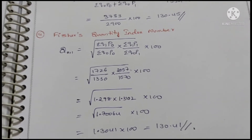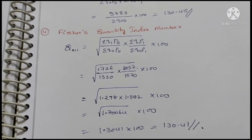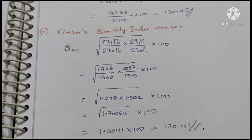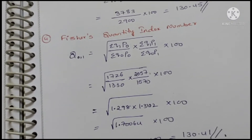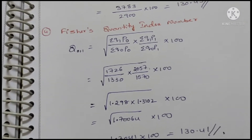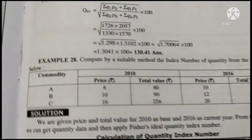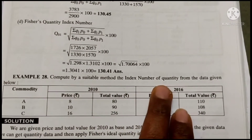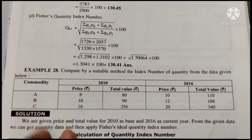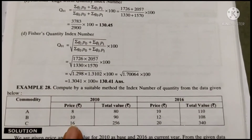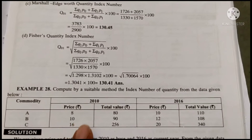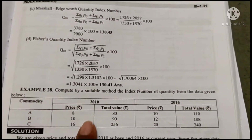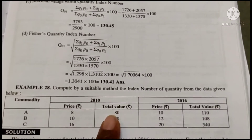If you haven't seen the earlier price index numbers videos (Parts 1 and 2), watch those first to understand this topic. Now here is a homework problem: Compute by a suitable method the index numbers of quantity from the data given below. Calculate Laspeyre's, Paasche's, Dorbish, and Fisher — four methods. The data gives 2010 price and value, and 2016 price and value. Quantity is not directly given.